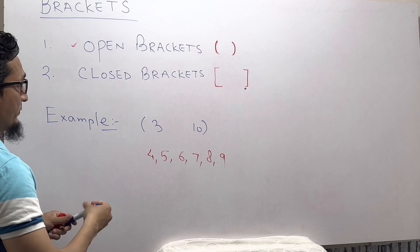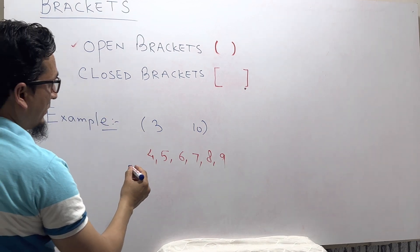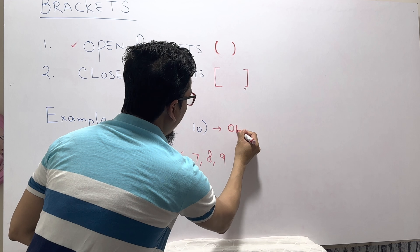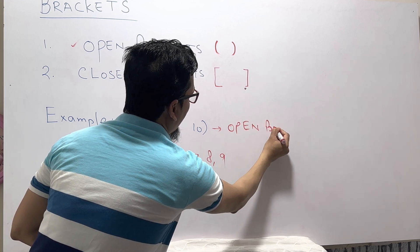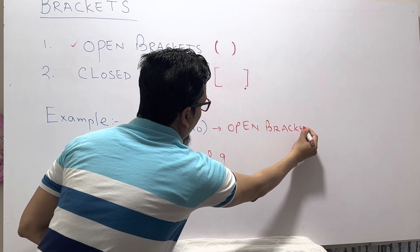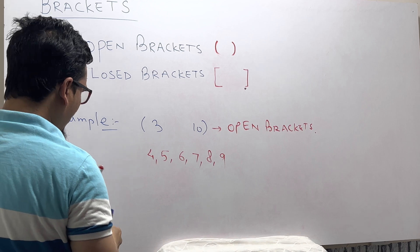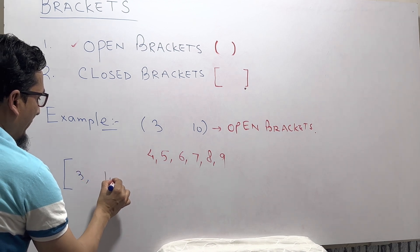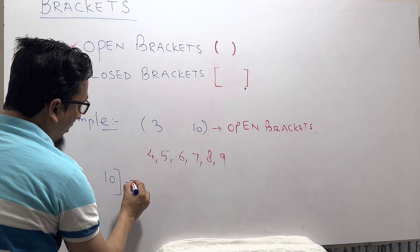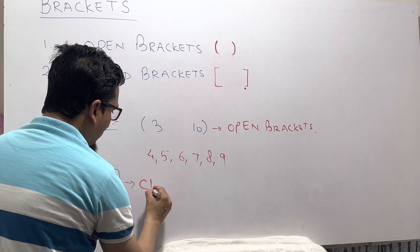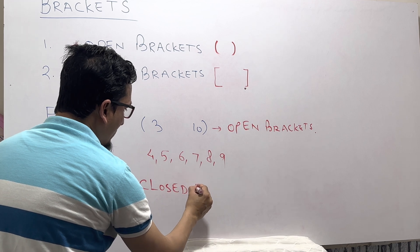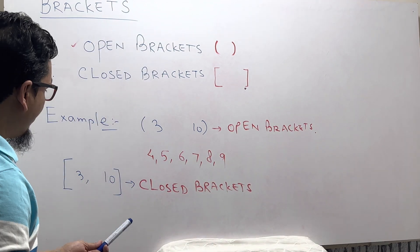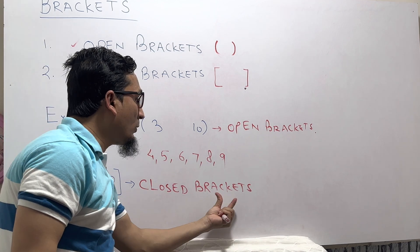Now let me explain the closed bracket. For example, if I have the interval from 3 to 10 written with closed brackets — that is, [3, 10] — this is the closed bracket.